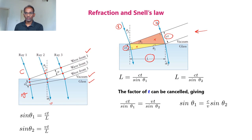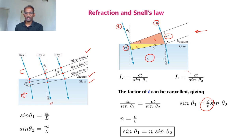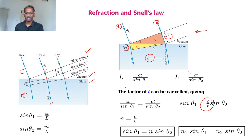Rearranging, sin theta_1 equals (c/v) times sin theta_2. Since c/v is nothing but the refractive index n, we get sin theta_1 equal to n times sin theta_2, where theta_1 is the angle of incidence in vacuum, theta_2 is the angle of refraction inside glass, and n is the refractive index of glass. If neither medium is vacuum, we can write the general form n1 sin theta_1 equal to n2 sin theta_2, where n1 and n2 are the refractive indices of the two media. This law is known as Snell's law.